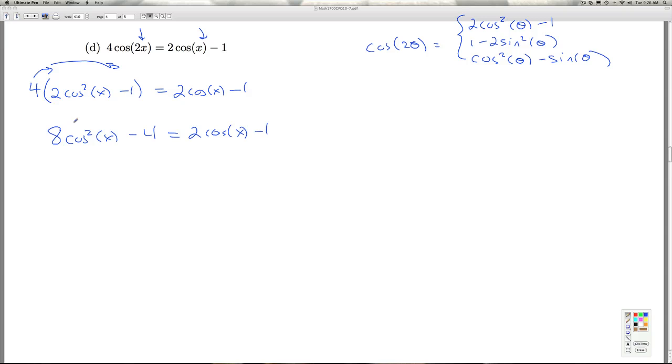The highest power of cosine is cosine squared. That means I've got a quadratic equation here. And how do we solve quadratics? We get everything on one side, 0 on the other. So I'm going to keep the 8 cosine squared x on this side, subtract over the 2 cosine x, and when I add the 1 over, that's going to give me a minus 3. This gives me this equals 0.